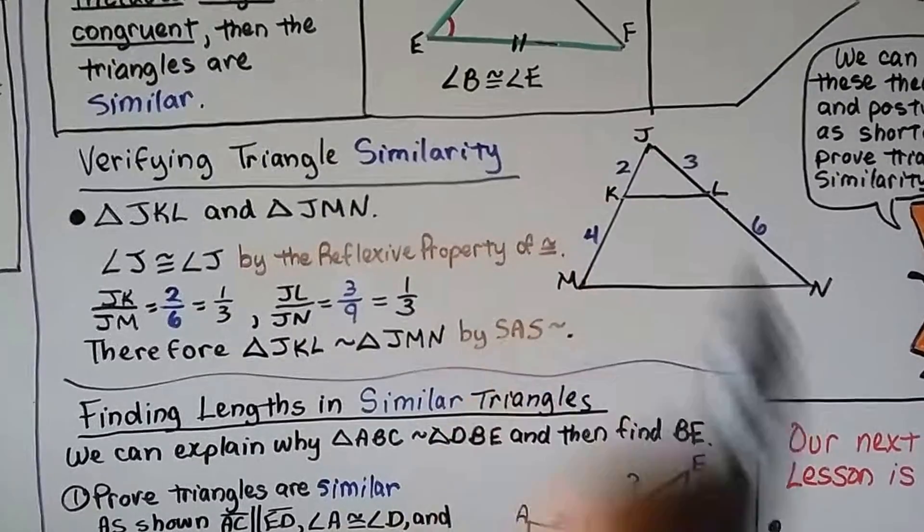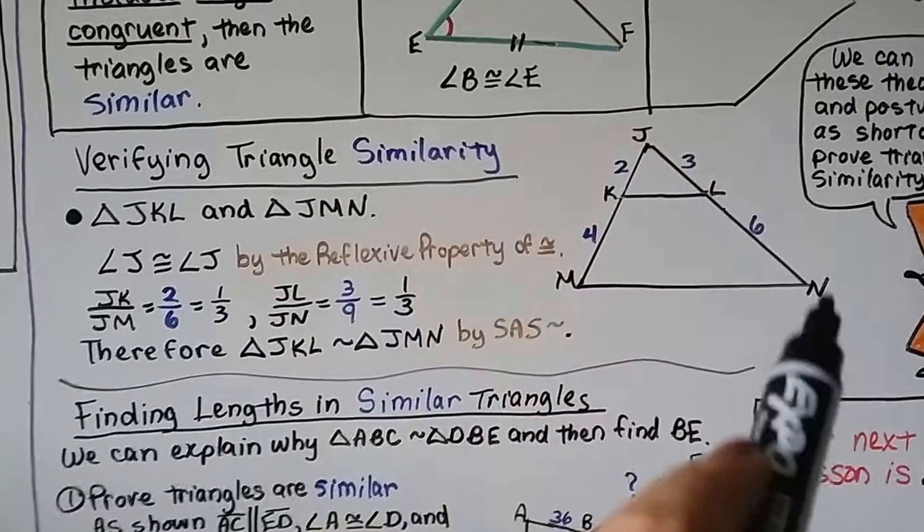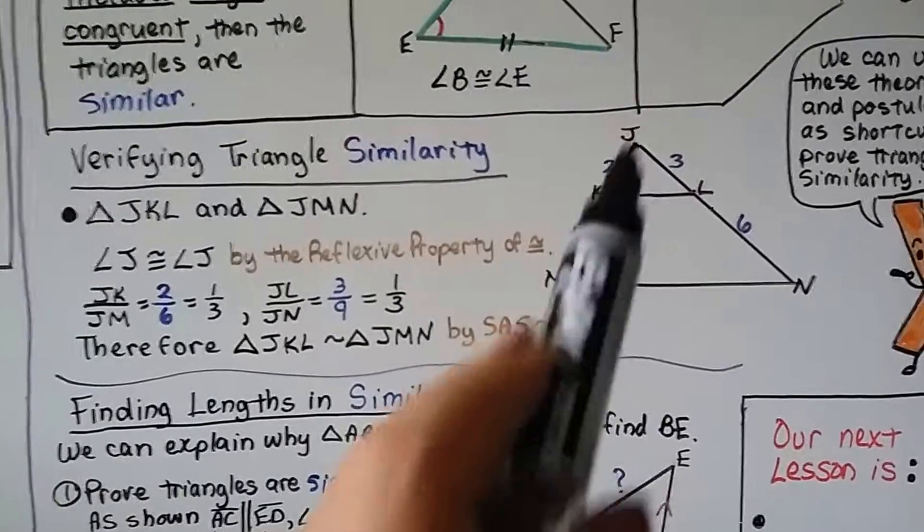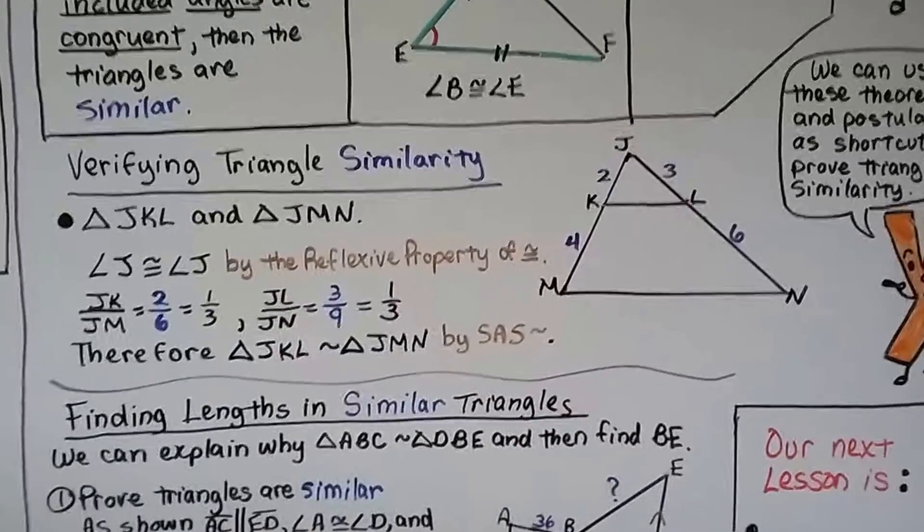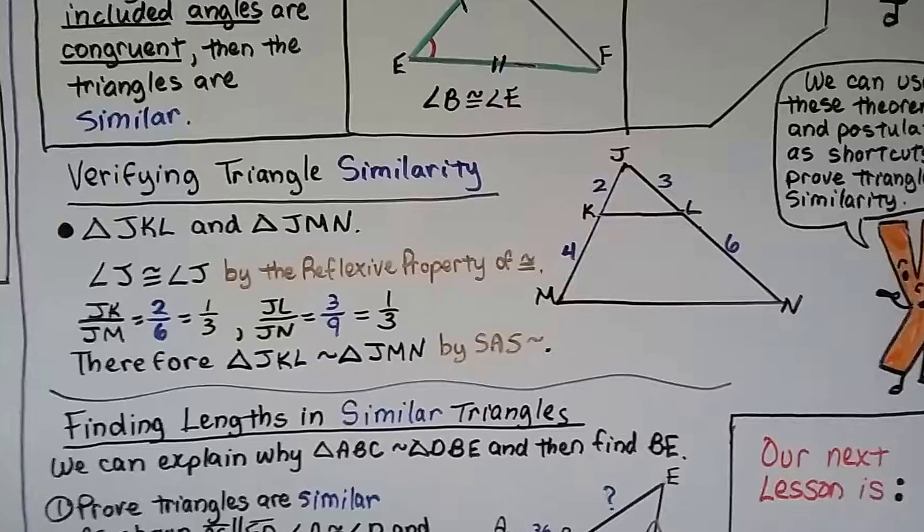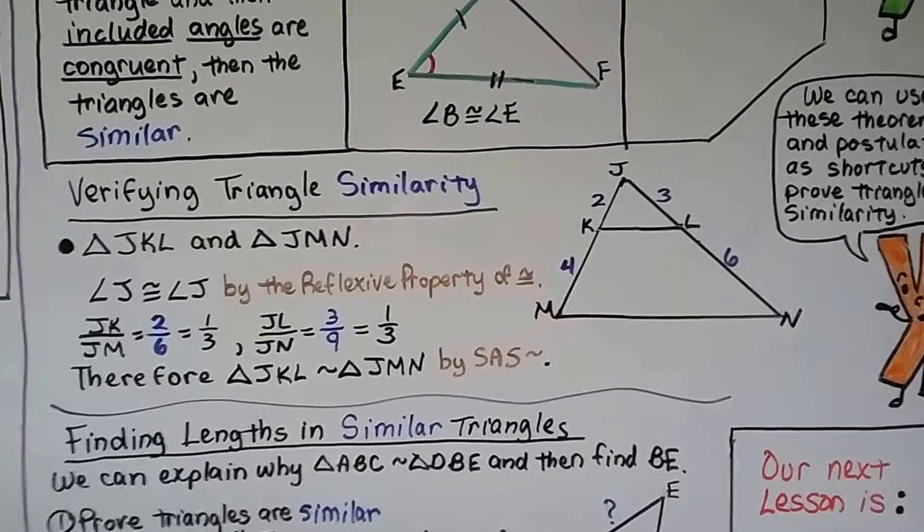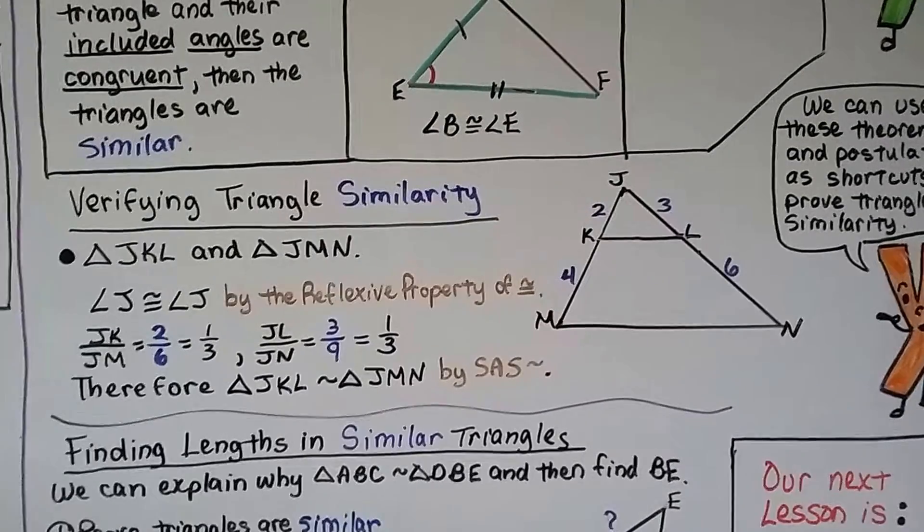And JL, this little 3, corresponds to JN. So we have JL over JN, and that's a 3 over a 6 plus 3 is a 9 for the whole length. That's a one-third. Therefore, triangle JKL is similar to triangle JMN by SAS, side angle side similarity.